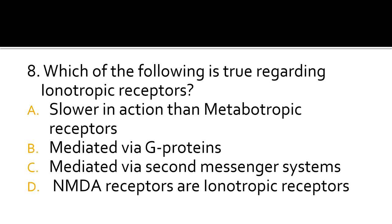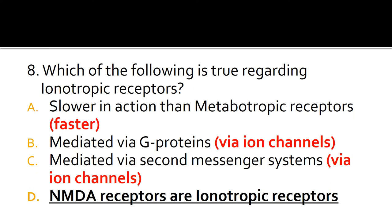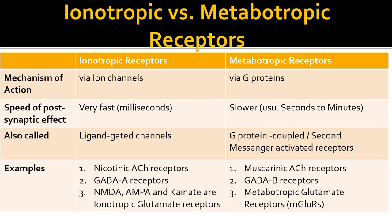NMDA receptors are ionotropic receptors, and the correct answer is B. Ionotropic receptors are much faster than metabotropic receptors. Ionotropic receptors act via ion channels, not via G proteins or second messenger systems. Key differences between ionotropic and metabotropic receptors are listed in the slide for reference.